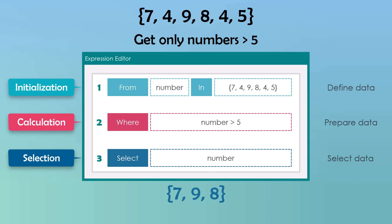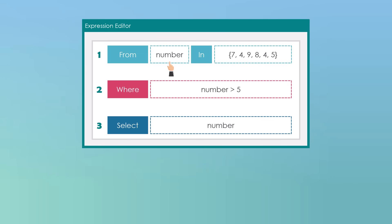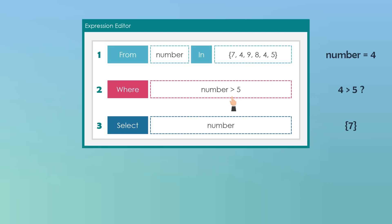The output of this query will be a sequence containing only the numbers greater than 5, of type IEnumerable of integer. Let's see how the query works step by step. The variable 'number' iterates the numbers inside the array. In the first iteration it has the value 7 — it's greater than 5, so we select it. The next number is 4 — it's not greater than 5, so we don't select it. We continue iterating all numbers and select only those that meet the criteria. At the end we get only those 3 numbers as output.